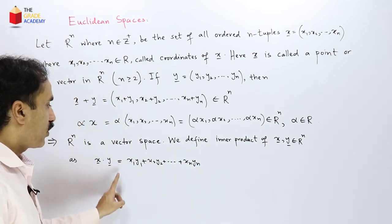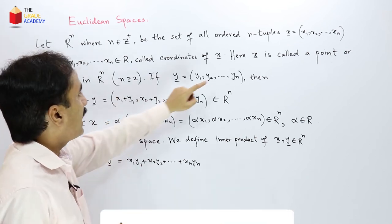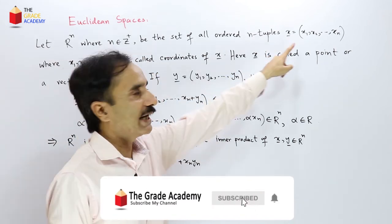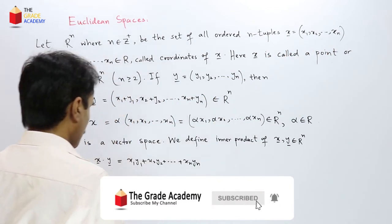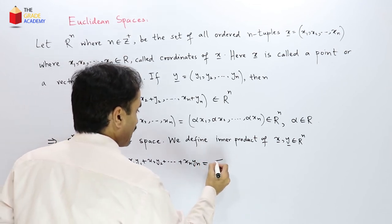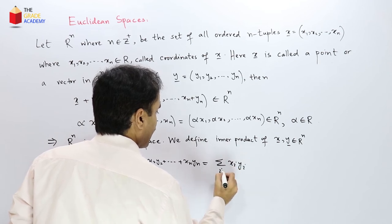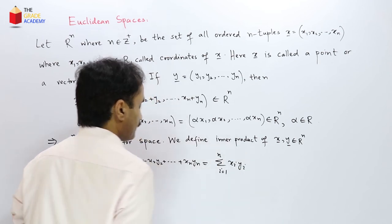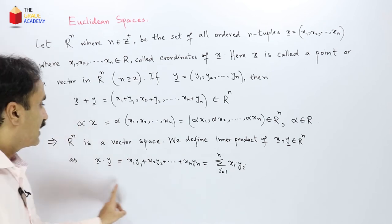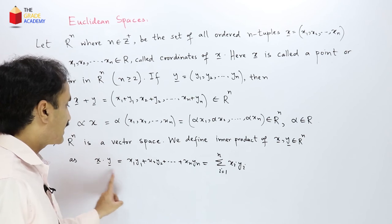So this inner product is basically obtained by multiplying the corresponding elements of x and y and then adding. So we can write it in sigma notation as the sum of all xi yi where i goes from 1 to n. So this is the inner product of x and y.